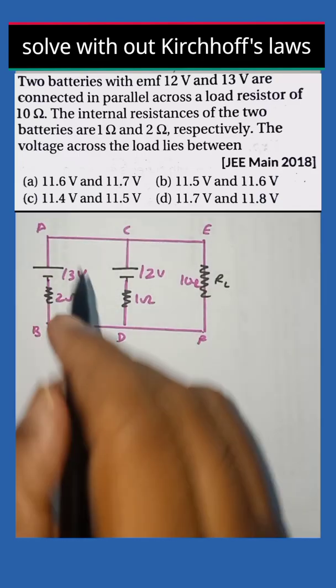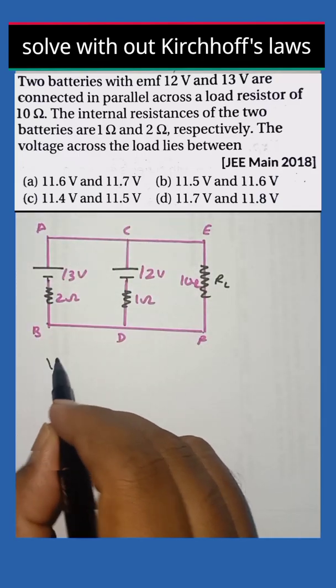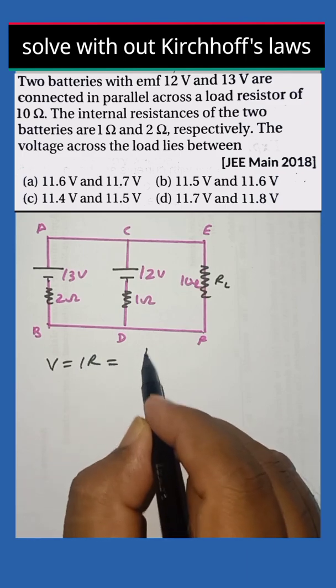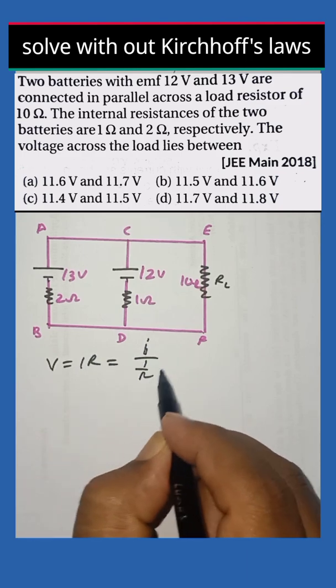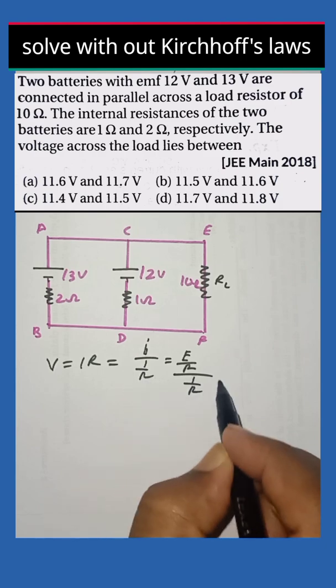So how to solve this problem without using Kirchhoff's law. You know voltage is equal to I into R. Can you write this as I by 1 by R, where I can be taken as E by R whole divided by 1 by R?